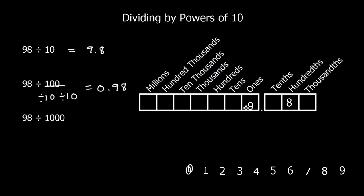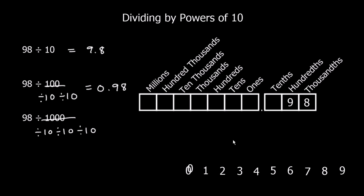Going back to 98 one more time, we divide by 1,000, which is the same as dividing by 10 three times. We move all the digits back three times. We have blanks between the decimal point and our digits, which we fill with a zero, and nothing in front of the decimal point, so we add a zero there too. That gives us 0.098.